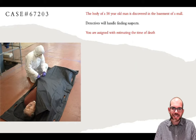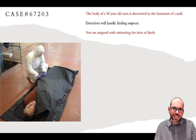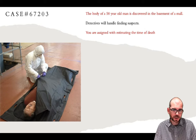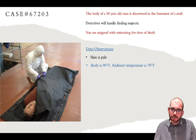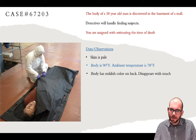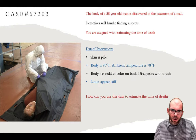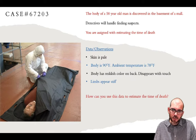Let's start by looking at case 67203. The body of a 50-year-old man is discovered in the basement of a mall. Your role is to estimate the time of death for this individual. Being the forensic investigator you are, you immediately make observations and collect data. The skin of this individual is pale, the body is at about 90 degrees Fahrenheit when the ambient temperature of the basement is 78 degrees Fahrenheit, the body is a reddish color on the back that disappears when touched, and the limbs are starting to appear stiff.